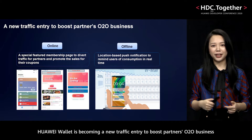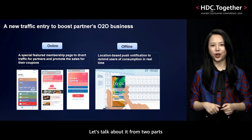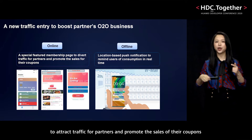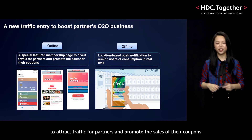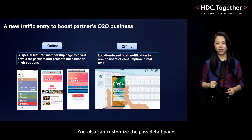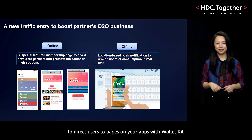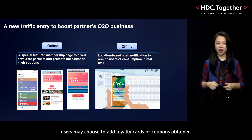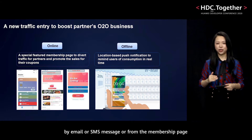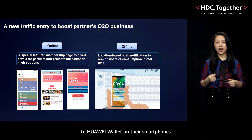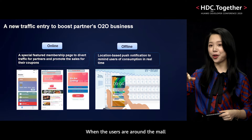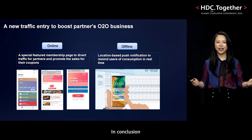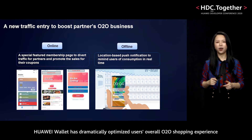For commerce, Huawei Wallet is becoming a new traffic entry to boost the partner's O2O business. Online, Huawei Wallet provides a special featured membership page to attract traffic for partners and promote the sales of their coupons. You can also customize the pass detail page to direct users to pages on your apps. Offline, through location-based notifications, users may add loyalty cards or coupons to Huawei Wallet. When users are around the mall, they will be notified of consumption using loyalty cards or coupons.